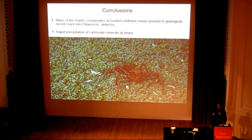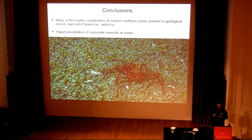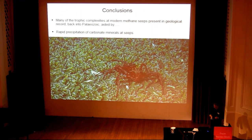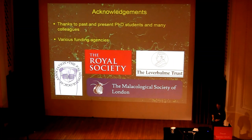In these ancient seep communities we have evidence for all sorts of interactions — between microorganisms, between microorganisms and animals, and between animals themselves — so we can reconstruct quite a lot of the trophic diversity you see at modern seep sites in fossil examples as well. Part of this is because rapid precipitation of authigenic carbonates freezes into place some of these interactions that you might not see in other marine communities. There is quite a lot of opportunity to develop this work at methane seep sites in the future. Thanks to past and present PhD students, many colleagues, and various funding agencies — and we're back on time!